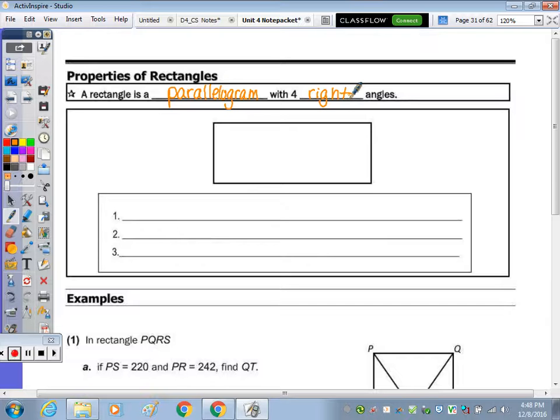The properties of a rectangle: number one, it has all parallelogram properties. Number two, as we just mentioned, it has four right angles. And number three, before we mark this in the picture, the diagonals are congruent.